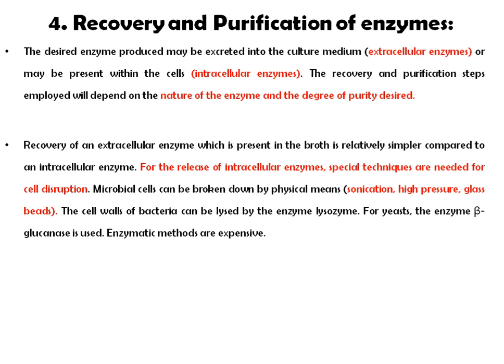For cell disruption, physical agents such as sonication, high pressure, and glass beads are used for breakdown of the cell. Chemical methods such as lysozyme can also be used for bacterial cell breakdown. For yeast, beta-glucanase is used. Enzymatic methods are more expensive compared to physical methods.